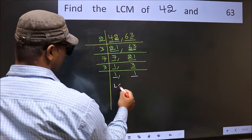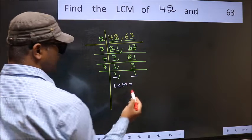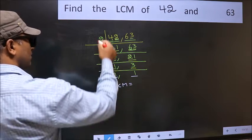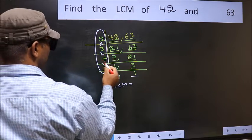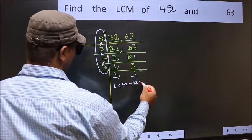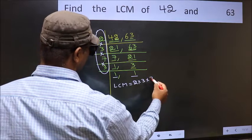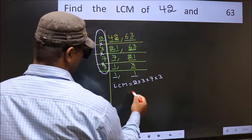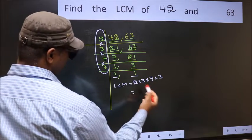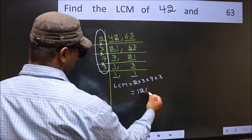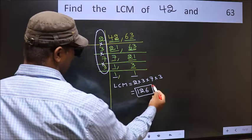So our LCM is the product of these numbers. That is 2 into 3 into 7 into 3. When we multiply these numbers, we get 126 is our LCM.